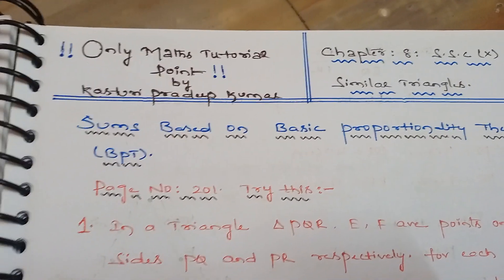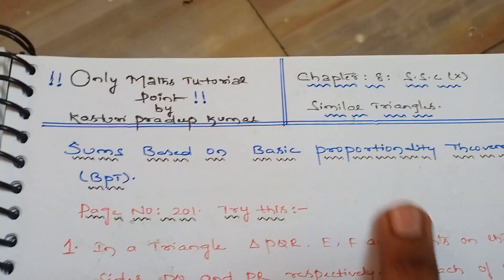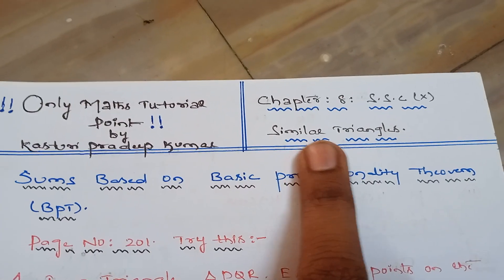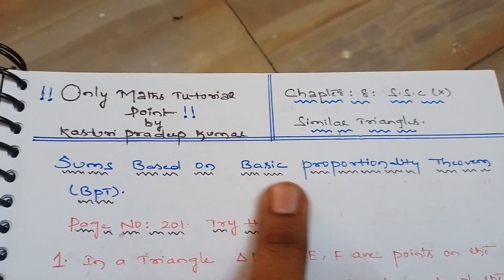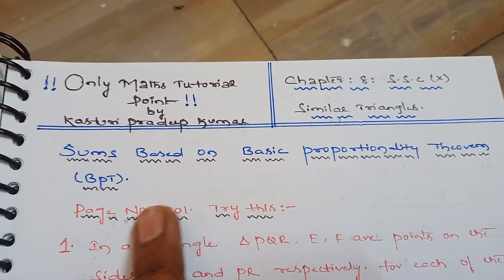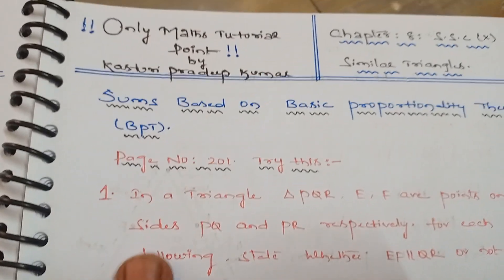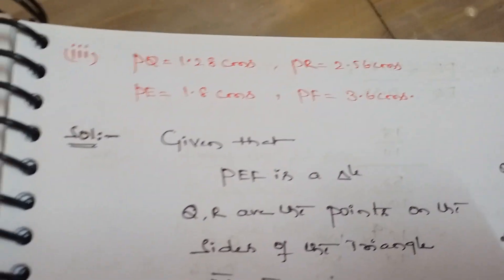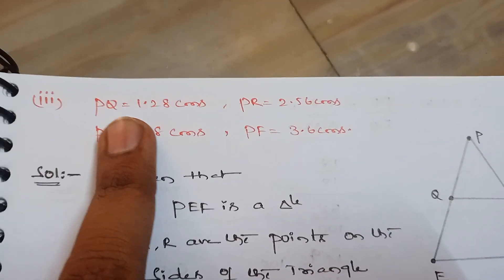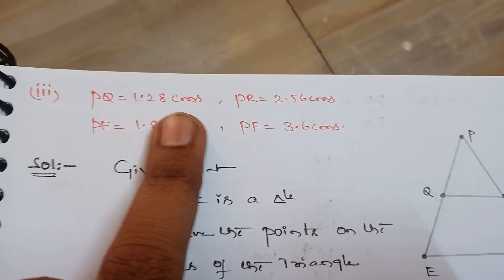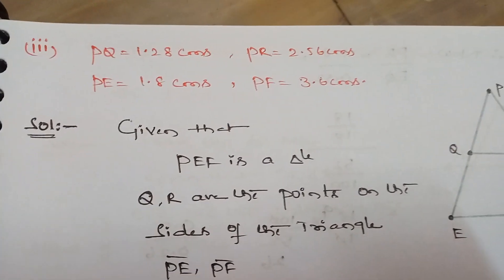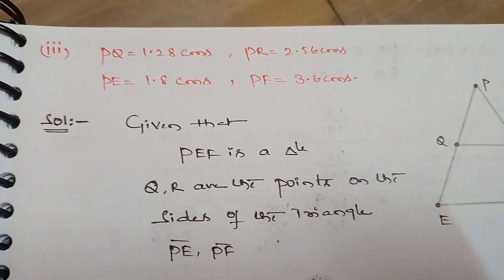Hi guys, welcome to Only Math Tutorial Point. Today we are going to discuss Chapter 8, Class 10th, similar triangles - sums based on Basic Proportionality Theorem continuation, page number 201. Guys, try this exercise third sum. PQ is given as 1.28 centimeters, PR is given as 2.56 centimeters, and PE is given as 1.8 centimeters.